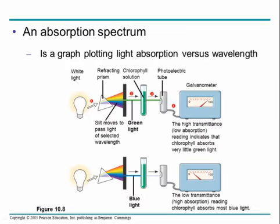You break the light into its component visible parts — its rainbow — and shine it through a solution. The solution looks green. The reading indicates that chlorophyll absorbs very little green light because green passes through. You'll notice blue gets absorbed; very little blue reaches the photoelectric tube.